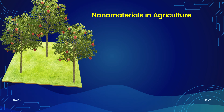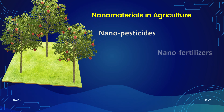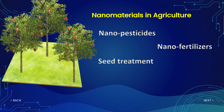One major sector where nanomaterials are widely used is agriculture. To increase yield, nanopesticides and nano-fertilizers containing nanoparticles are used. In seed treatment, nanomaterials are included to enhance germination and crop yield. Sensors incorporating nanomaterials can detect plant diseases, soil conditions, and pesticide residues in real time, making nanomaterials very useful in the agricultural field.